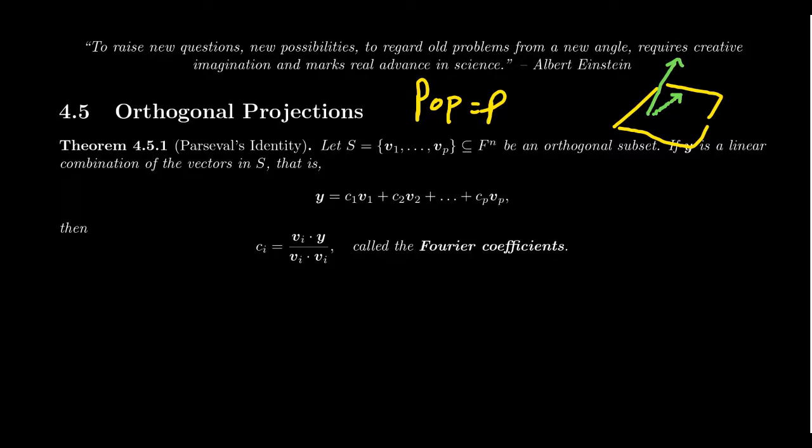Well, orthogonal, as we've learned, means something to do with right angles. And so the orthogonal projection will be a projection of a vector into a space so that a right angle is formed between the projection and the normal vector of the space. That's going to be our goal here.